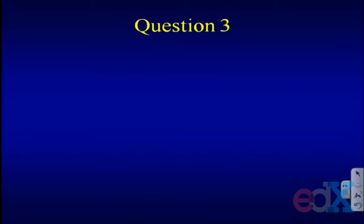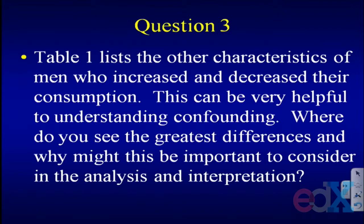Question three speaks to Table 1 in the paper, which lists the other characteristics of men who increased and decreased their alcohol consumption. This can be very helpful to understand confounding. Where do you see the greatest differences, and why might this be important to consider in the analysis? Why is it that some people increased and some people decreased? Are the increasers different from the decreasers? This is a classic issue in prospective observational cohort studies — people who drink are slightly different from people who don't, for cultural, metabolic, or personal reasons. See if you can pick out the key areas of difference.